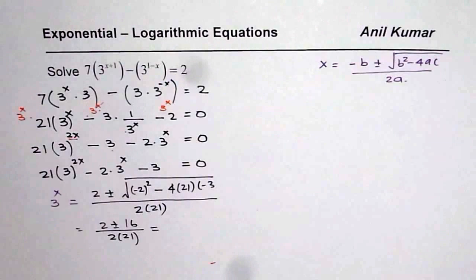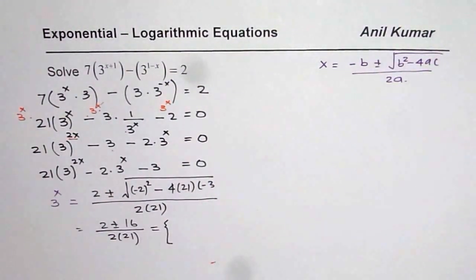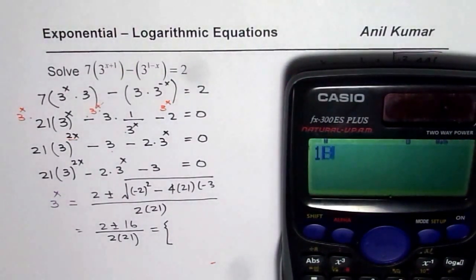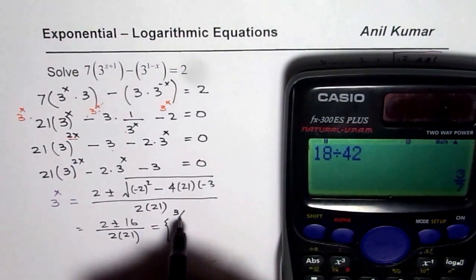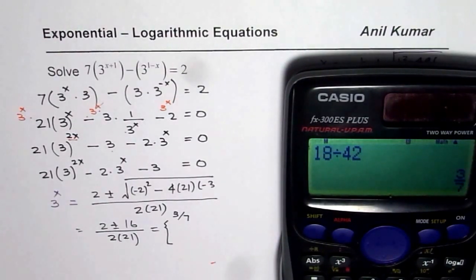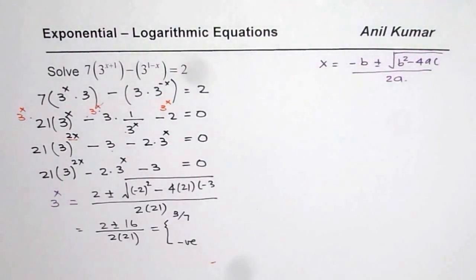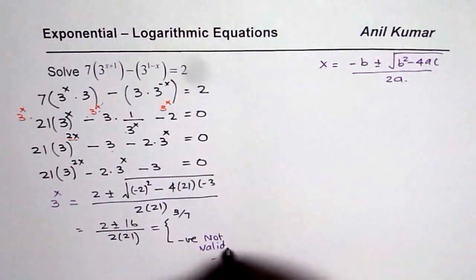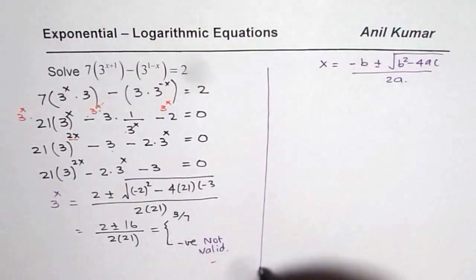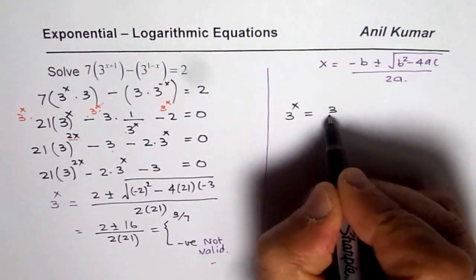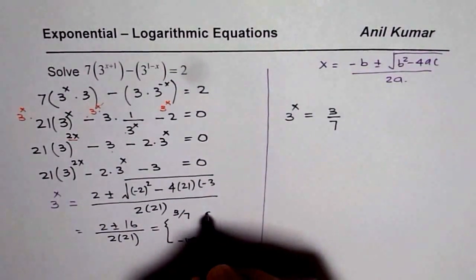So 3 to the power of x equals 2 plus or minus 16, divided by 42. We have two possible solutions: 2 plus 16 is 18, divided by 42 equals 3 over 7; and 2 minus 16 gives a negative answer. Whenever you are talking about exponential functions, a negative value is not valid because you are expecting a positive answer. So 3 to the power of x equals 3 over 7 is the only valid answer.